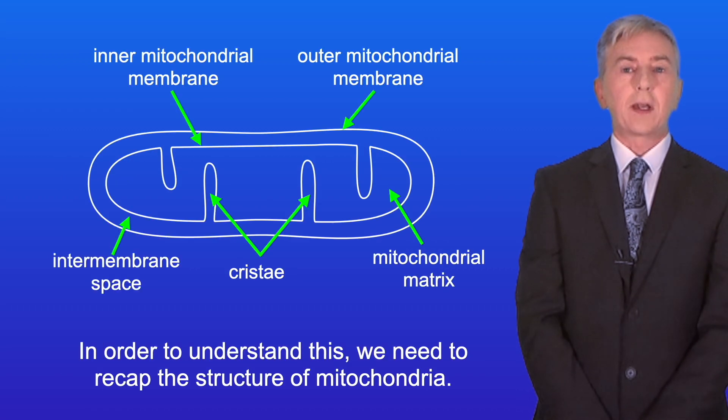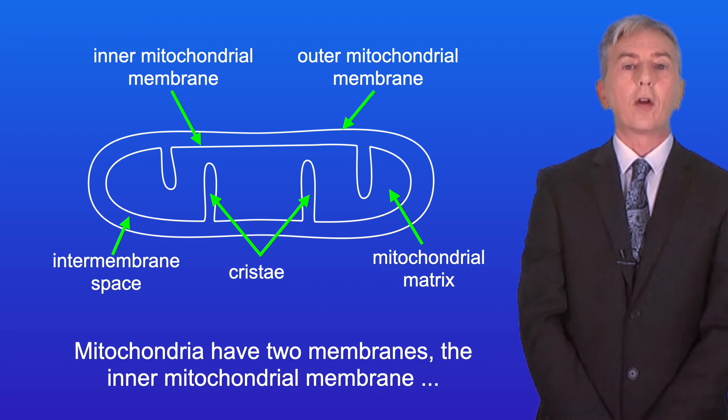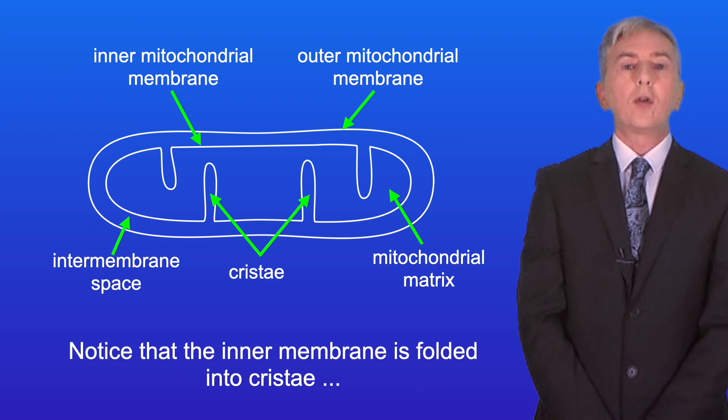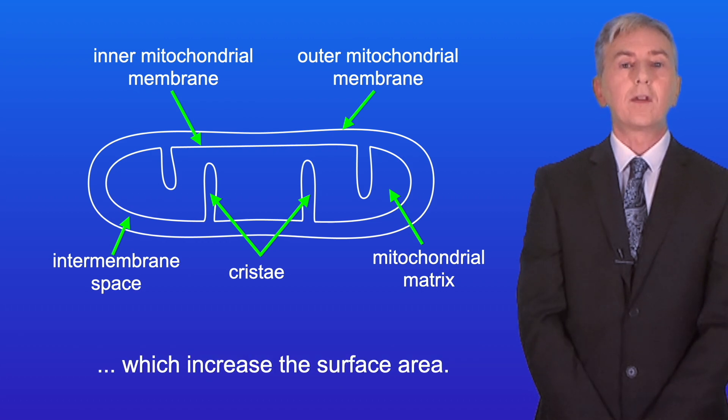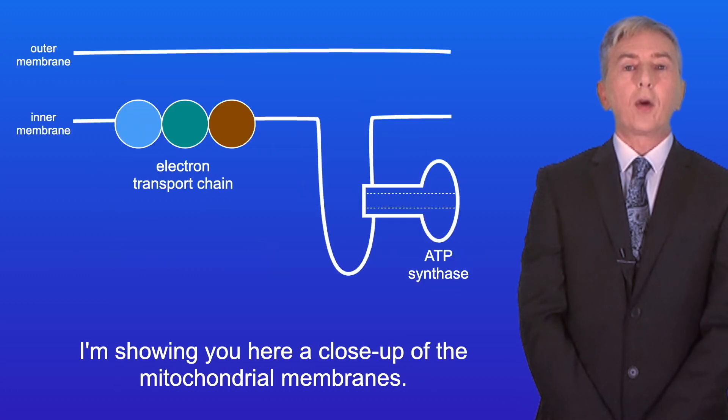Now in order to understand this, we need to recap the structure of mitochondria. Mitochondria have two membranes, the inner mitochondrial membrane and the outer mitochondrial membrane. And notice that the inner membrane is folded into cristae, which increase the surface area. In between these two membranes, we have the intermembrane space.